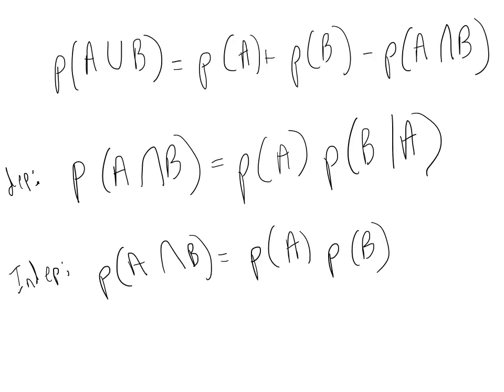To recap, we covered three important formulas. The first is for the union between two events, and it's the same formula regardless of whether events are dependent or independent. What does change is the formula for the intersection. For dependent events, the probability of both A and B is equal to the probability of A times the probability of B conditional on A. When events are independent, it's simply the probability of A times the probability of B.